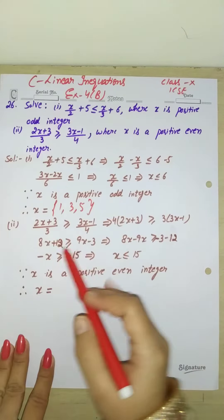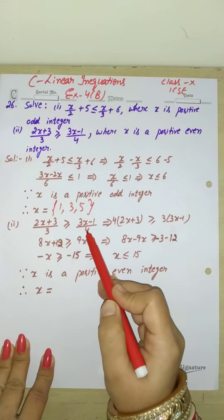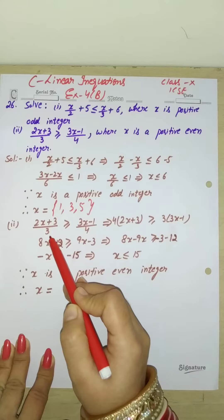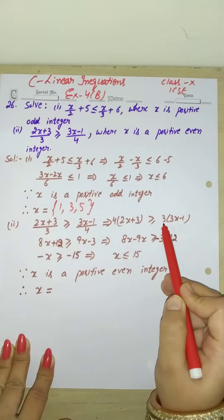Now, let's see the second one. This has a denominator, meaning the numerator and denominator are both there. So what you need to do here? You need to cross multiply. 4 is on the other side and 3 is on the other side. So 4 will multiply both, and then 3 will multiply both.